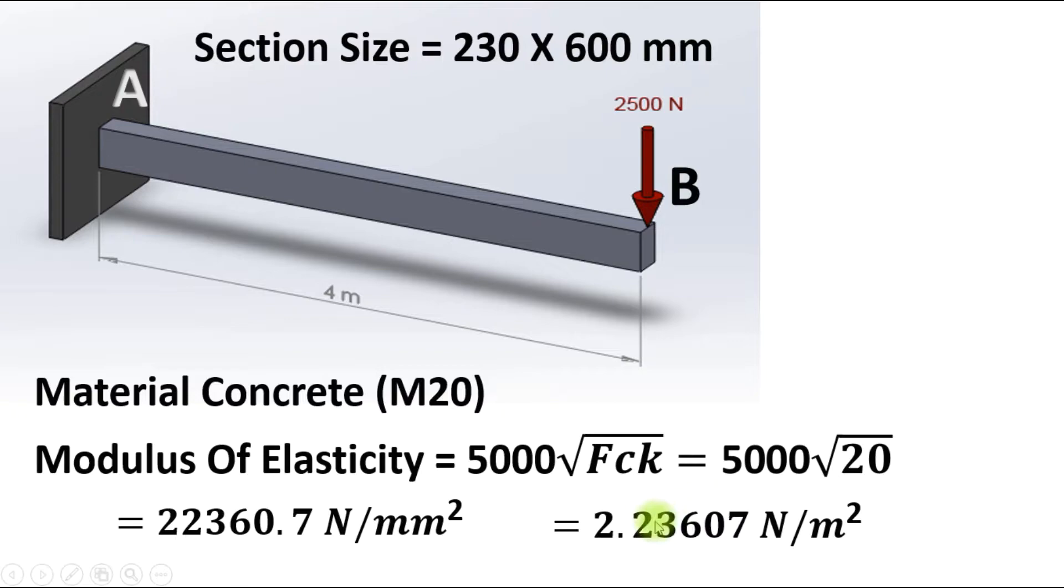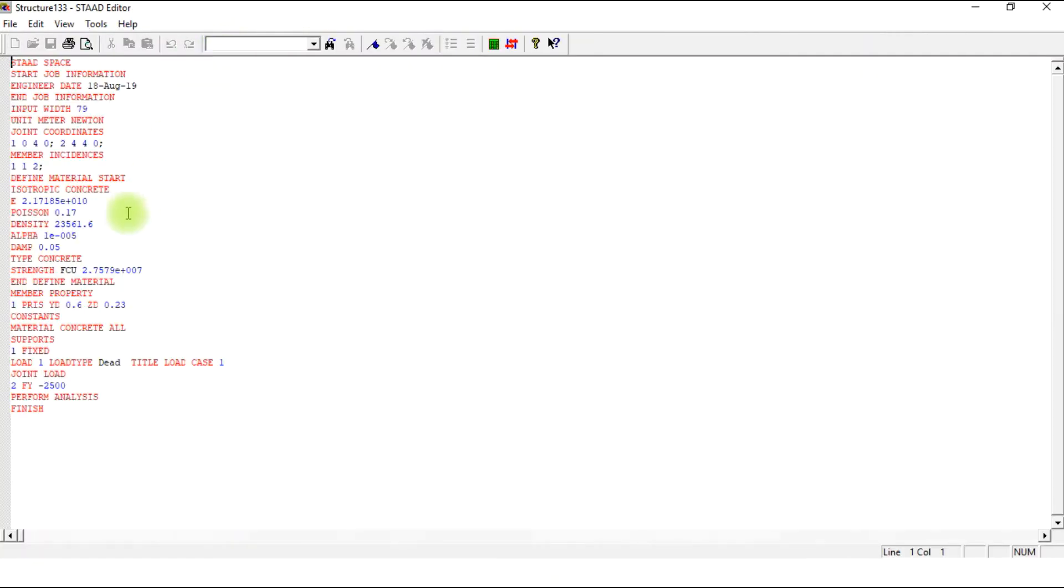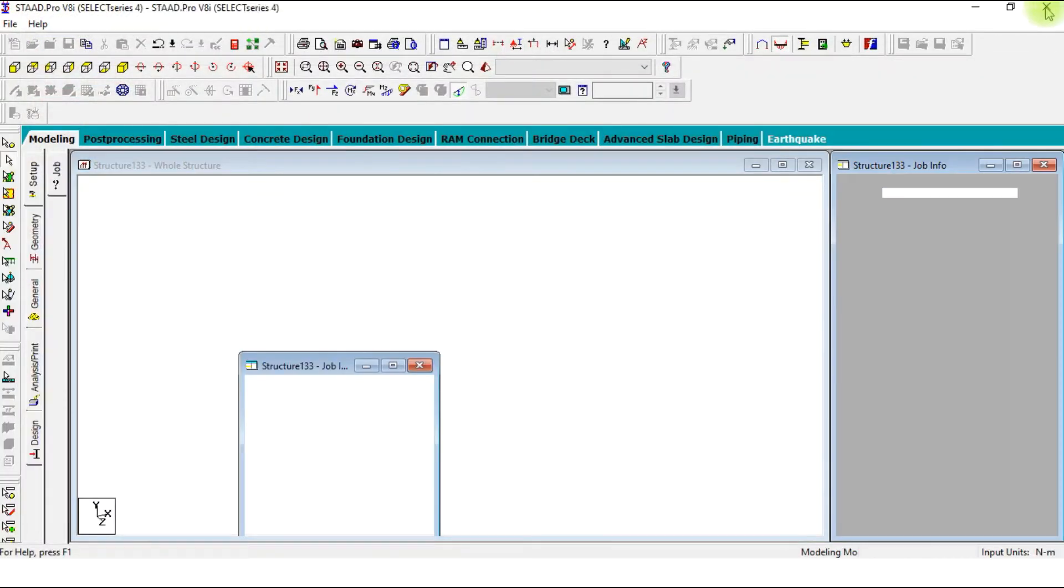In our case there is 2.23607, so give this modulus of elasticity instead. Go to STAAD editor mode, use 2.23607 and delete it, save the model, close it.